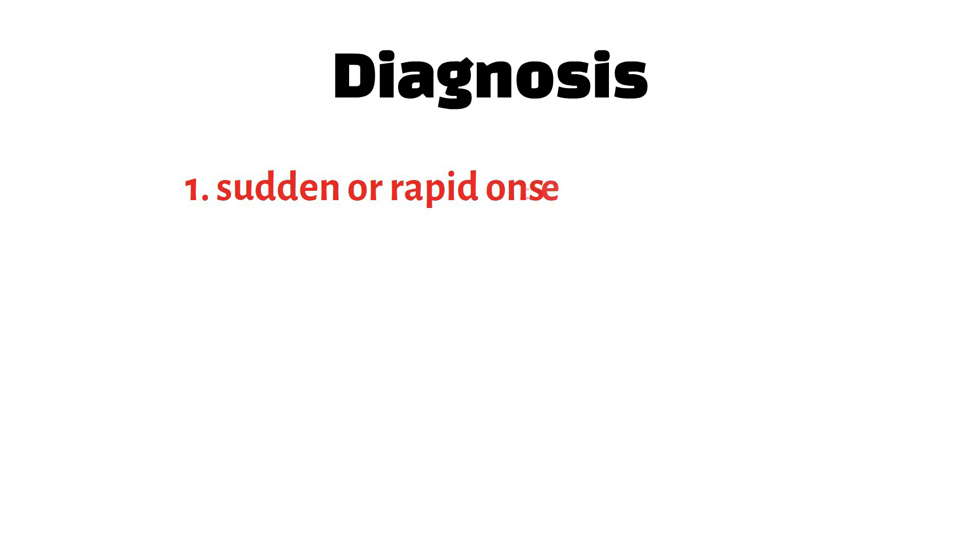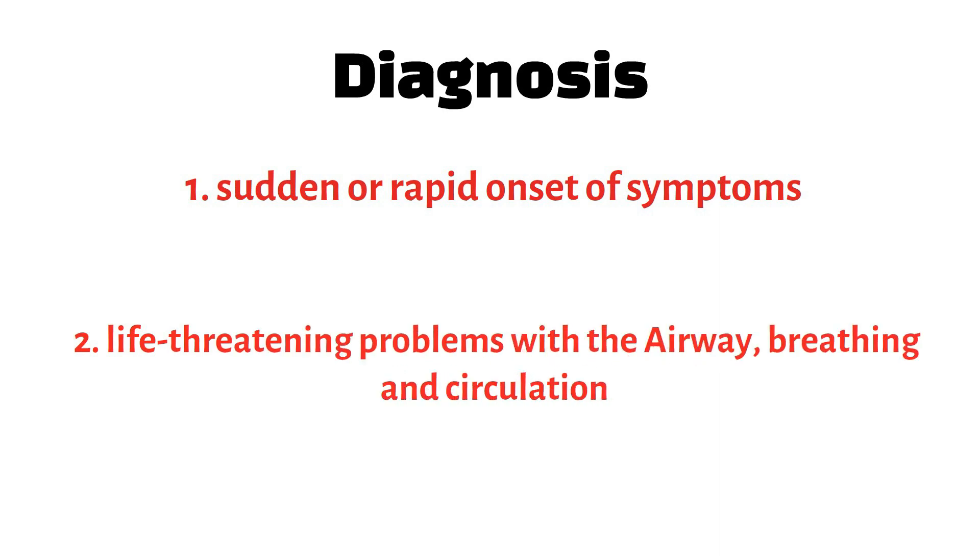Diagnosis is based on the characteristic findings from history and examination. Number one would be sudden or rapid onset of symptoms. Number two is life-threatening problems with airway, breathing, and circulation. Number three: skin or mucosal changes. If all three of these criteria are present, we can tell that this patient is having anaphylaxis.